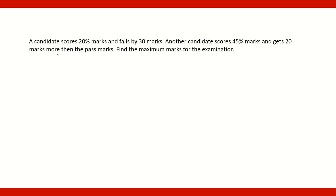Here is another question: a candidate scores 20 percent marks and fails by 30 marks — meaning he gets 30 marks less than the passing marks. We don't know the passing marks, so he gets 30 marks less at 20 percent.